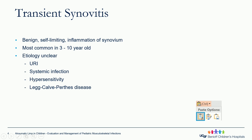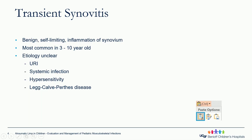Starting with transient synovitis: it is a benign and self-limiting condition, as it doesn't have the permanent cartilage damage that's typical of septic arthritis, but it is an inflammatory process of the synovium. It's most common in children 3 to 10 years old. The etiology is unclear, but most presentations have a preceding infection — most commonly an upper respiratory infection, or in cases of bacteremia or other systemic infections.